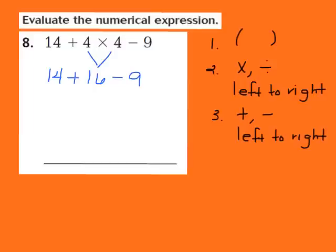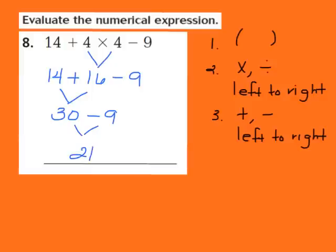Looking at my order of operations again, step 3 says add or subtract from left to right. I have both addition and subtraction in this expression. The rule states I have to perform them from left to right. Addition comes first, so I add 14 plus 16, which gives me 30. Now I have 30 minus 9. Subtracting gives me an answer of 21. Evaluating this expression following the order of operations gives me 21.